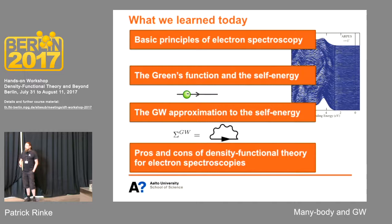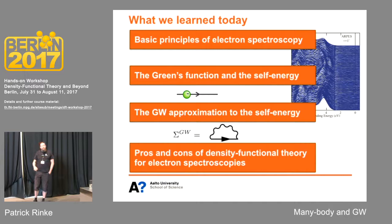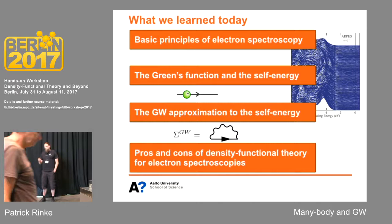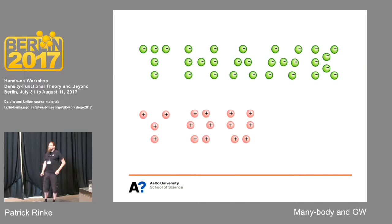This brings me to the end of my lecture. I've introduced the basic principles of electron spectroscopy and introduced the Green's function and self-energy. Then I've shown you the GW approximation to the self-energy and given a few cases where this gives us access to the physics we're really interested in. And I've talked about the pros and cons of DFT for excitation energies. Thank you for your attention.